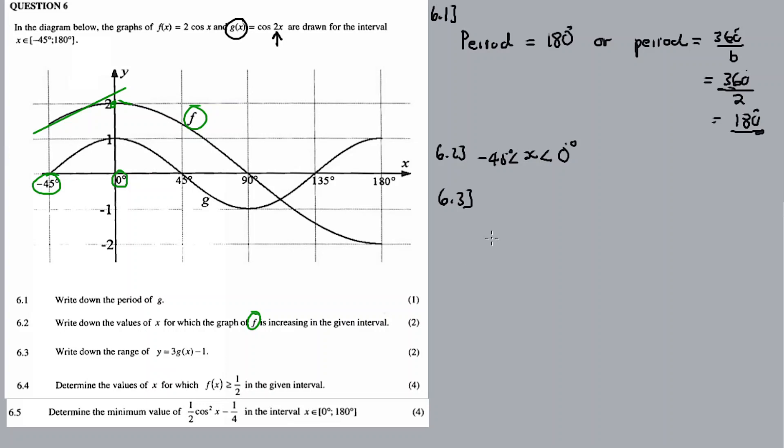Right, 6.3: Write down the range of y equal to 3g(x) minus 1. So if we're looking at the range, the range. Alright, alright, now we'll see. So it's a step-by-step, this thing. So the range, alright, the range.